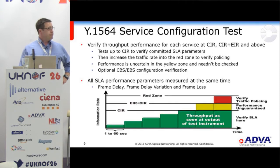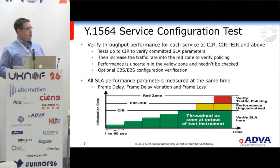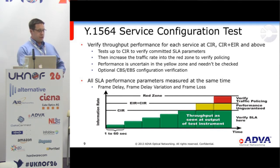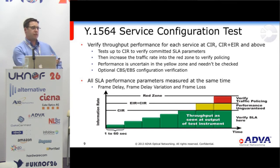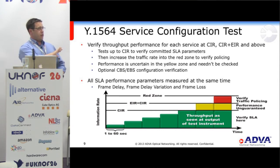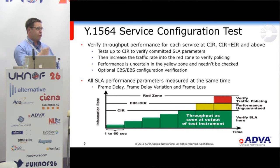The configuration test is used to verify the performance of each service — testing the committed information rates and the EIR above that — to make sure it meets the SLA parameters set by the service manager. Rather than testing at the maximum and backing off, it starts with a very low level and increments up, configurable down to one second. So you can very rapidly step up through the profile to test and get feedback as to whether your quality of service parameters are actually being met. It tests right through the profile into the committed information rate, through that into the EIR, and into the red zone where policers and shapers will start dropping traffic — which is acceptable because that's the service you've set.